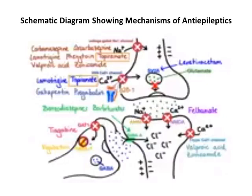Low voltage-gated calcium channels can be inhibited by valproic acid, zonisamide, and ethosuximide. Tiagabine blocks the reuptake of GABA back into the nerve terminals, thereby blocking its transport. On the other hand, vigabatrin blocks the enzyme GABA aminotransferase, which is responsible for the degradation or metabolism of GABA. This is how it enhances GABAergic transmission.